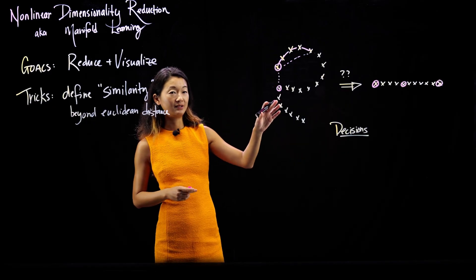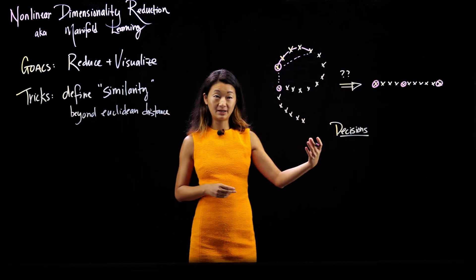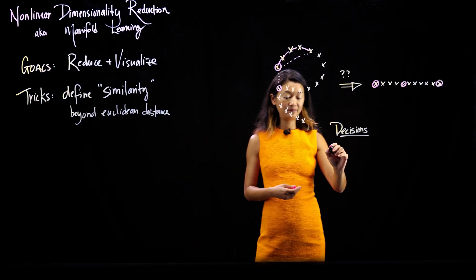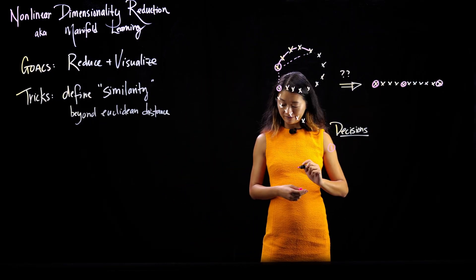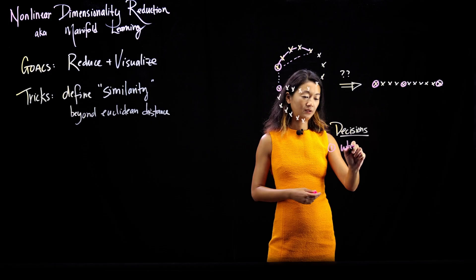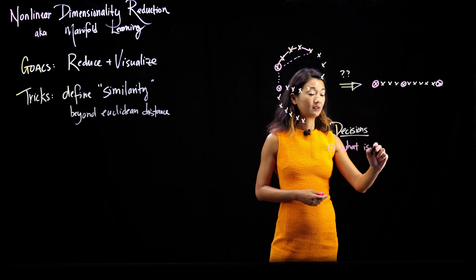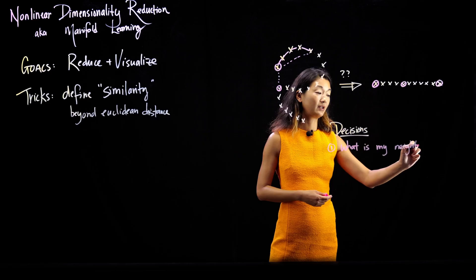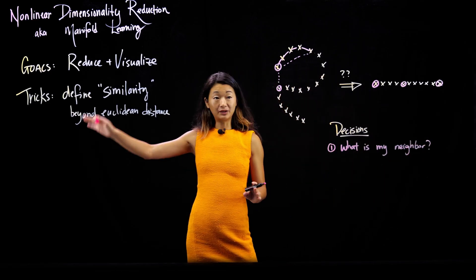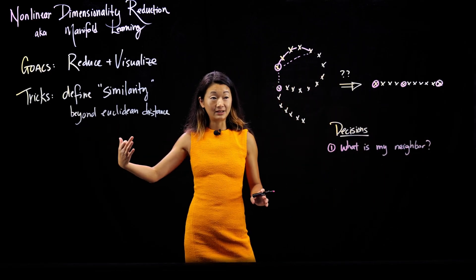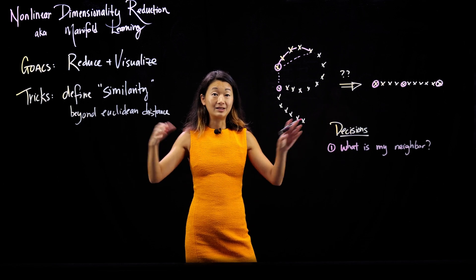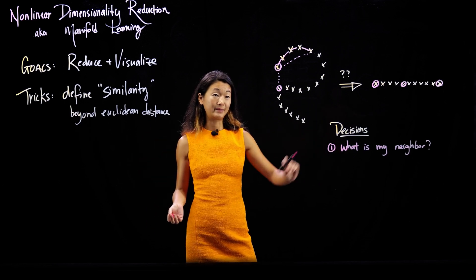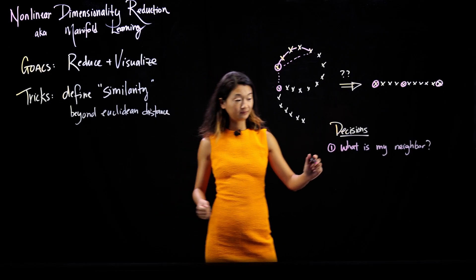And so what we want to do is define some notion of similarity that has a concept of neighborliness. Like the first decision we have to make is what is my neighbor? Like how close do you have to be to be considered my neighbor? With regular Euclidean distance and PCA and linear techniques, the distance is the only thing that determines my neighbor. But here I get to make a decision of what's my neighbor. How many neighbors do I have?